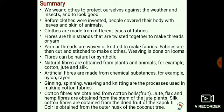Let us recall the lesson. We wear clothes to protect ourselves against weather and insects and to look good. Before clothes were invented, people covered their bodies with leaves and skins of animals. Clothes are made from different types of fabrics. Fibers are thin strands that are twisted together to make threads or yarn. Yarn and woven fabrics are needed to make fabrics, which are then cut and stitched to make clothes. Weaving is done on looms. Fibers can be natural or synthetic. Natural fibers are obtained from plants and animals — for example, cotton, jute, and silk.